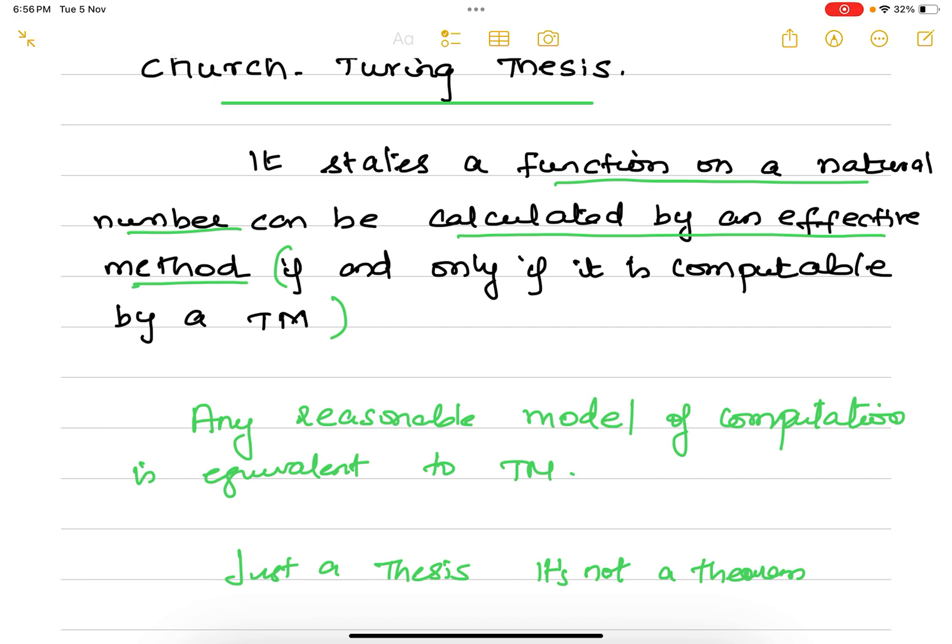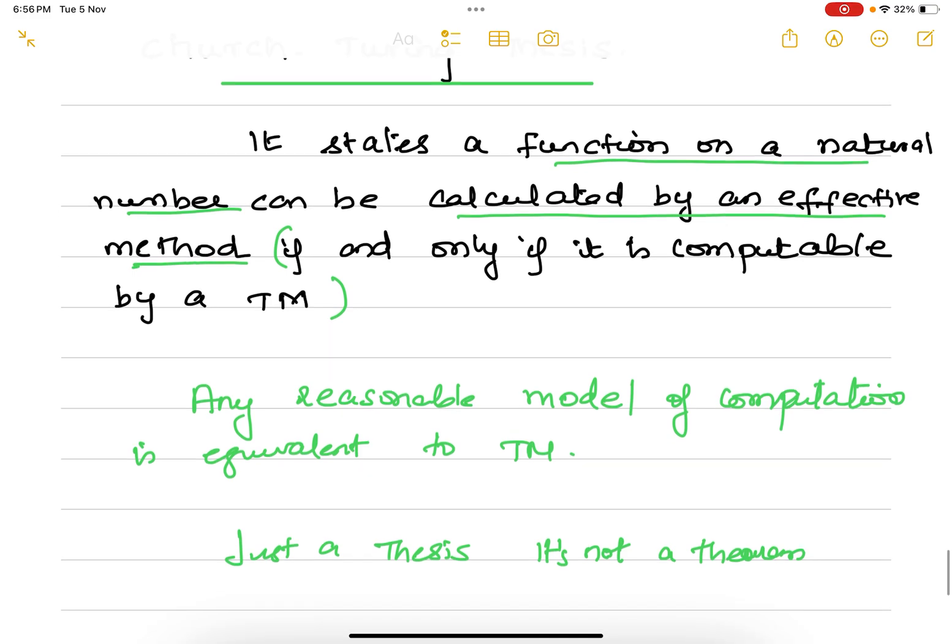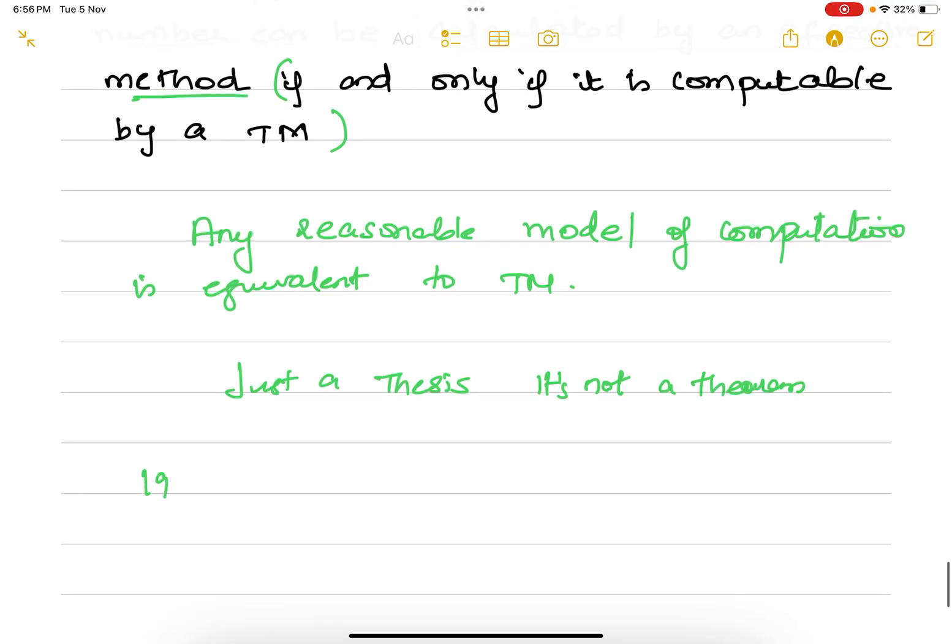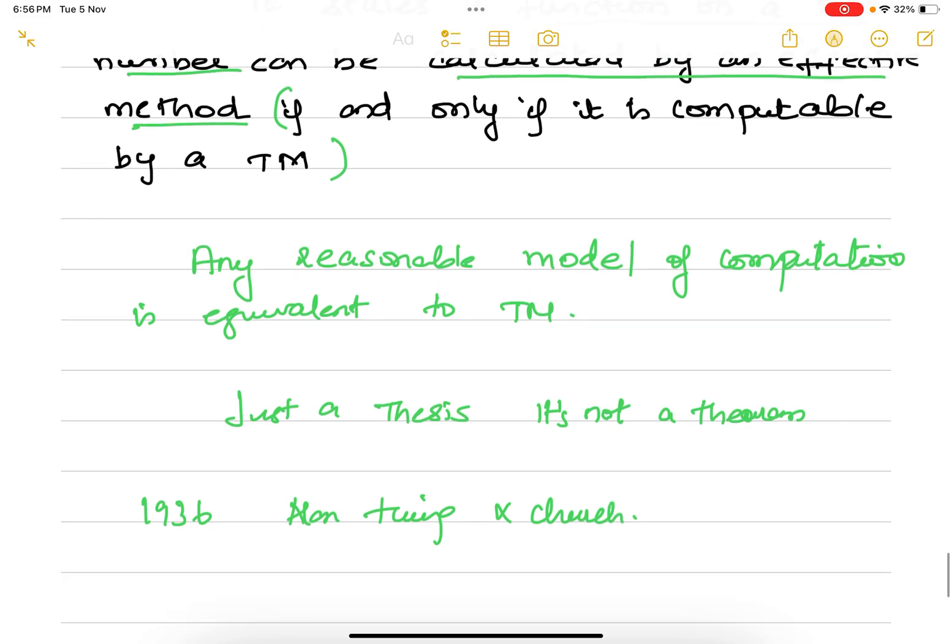This is the definition for Church-Turing thesis. In year 1936, when Alan Turing - actually Alan Turing and Church were both mathematicians - they were doing research on different models of computation. At that time there was no so-called present computers. They were trying to invent some sort of model that performs some basic operations which the current computers perform well.